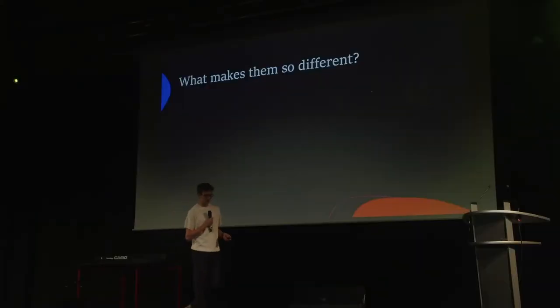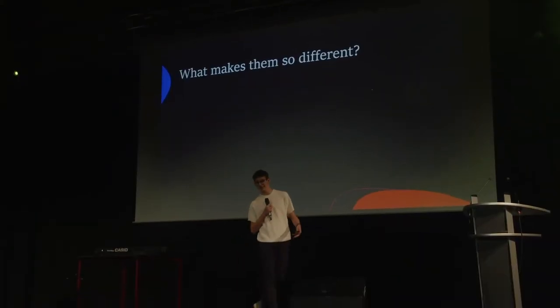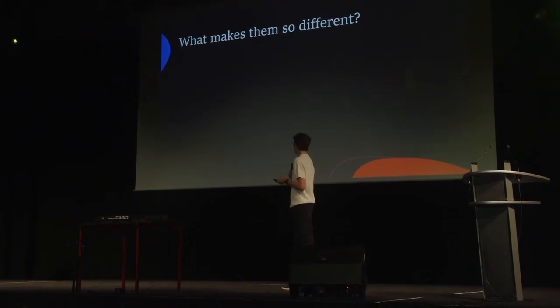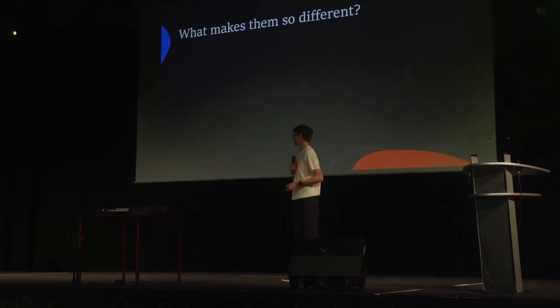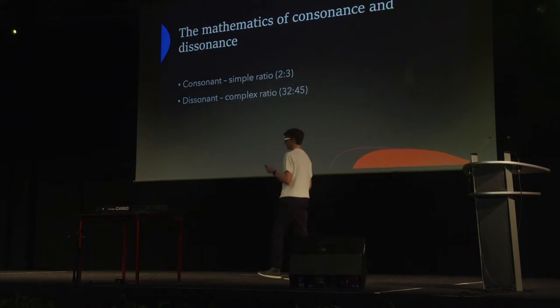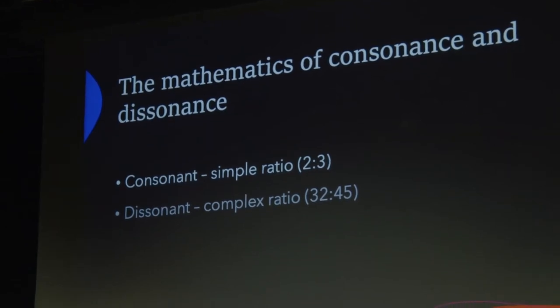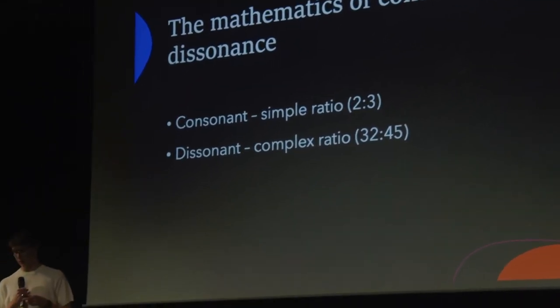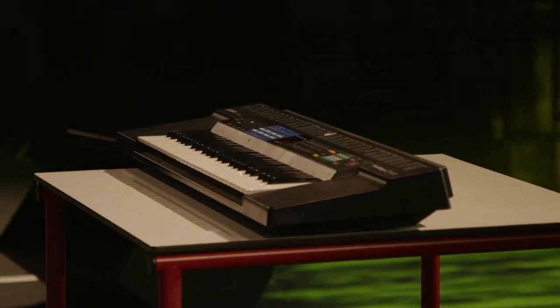I wanted to find out how we could rank them mathematically instead of this subjective ranking. After calculating and researching, I found that it is based on frequency ratios — more specifically, the complexity or simplicity of the frequency ratios. A consonant interval, the perfect fifth, has a ratio of 2 to 3, a simple frequency ratio. A dissonant interval has a ratio of 32 to 45, which is a complex ratio.